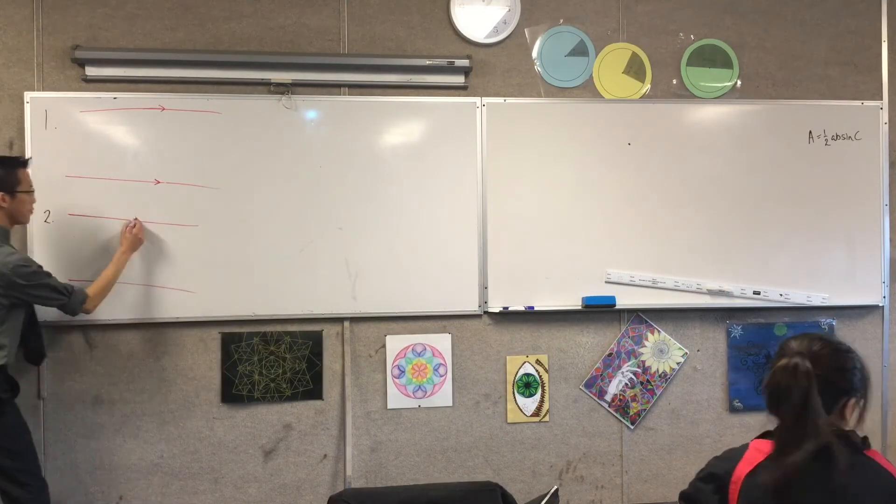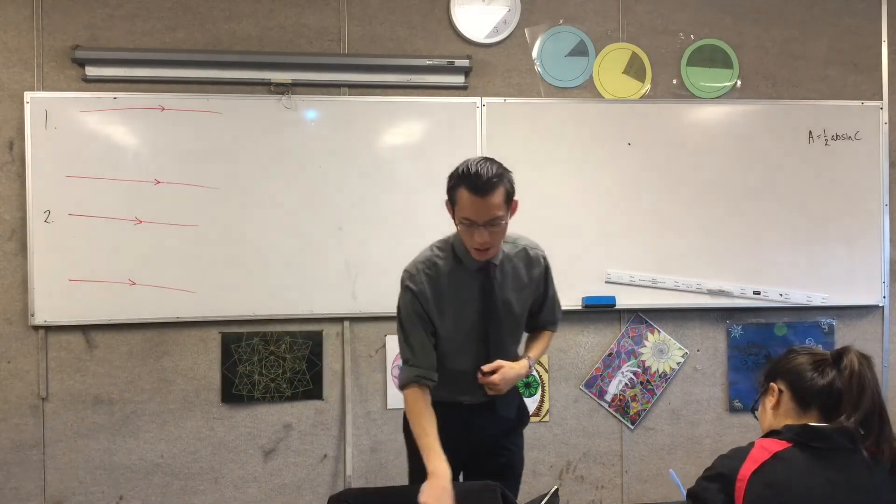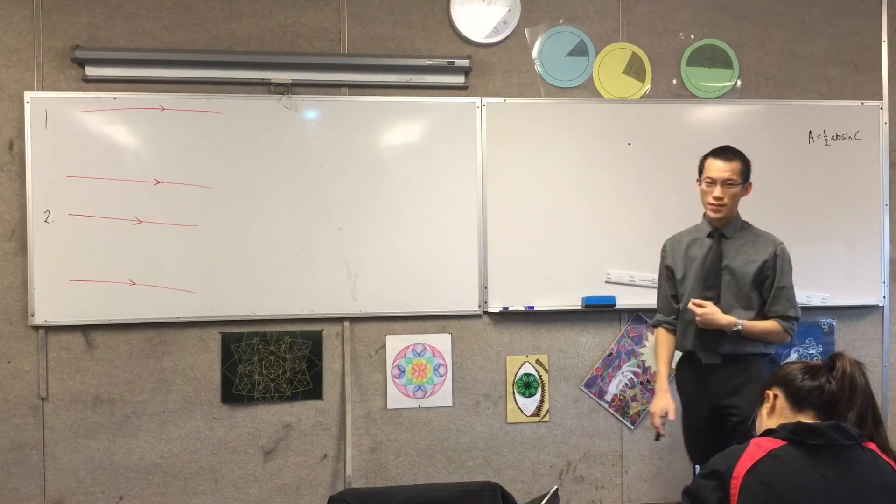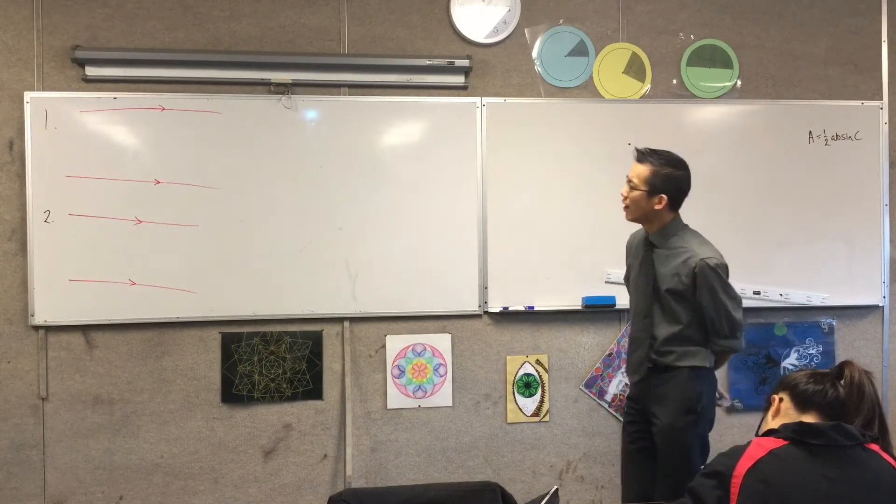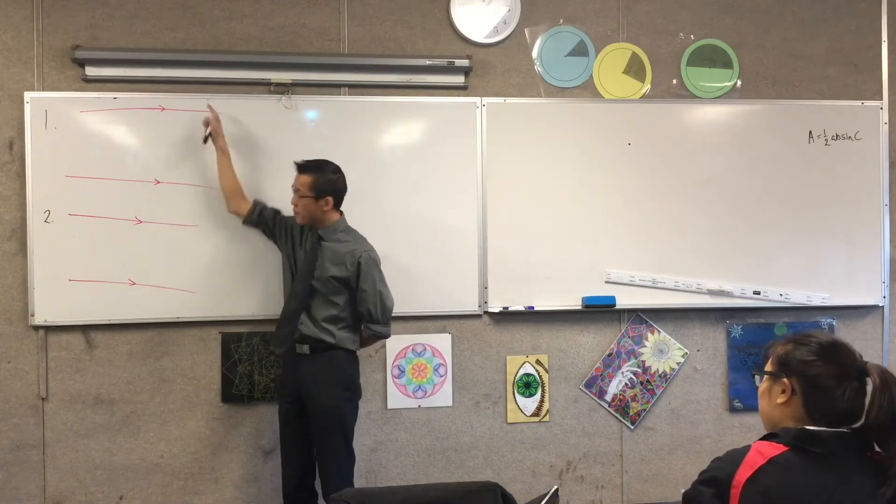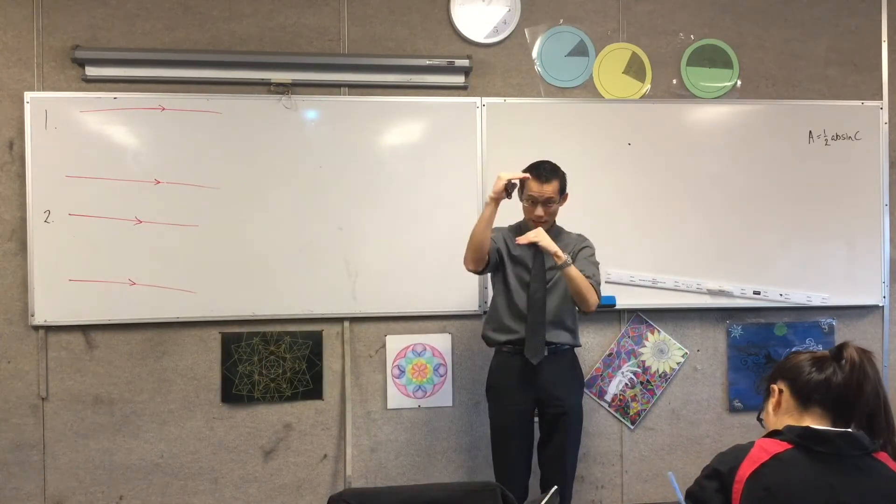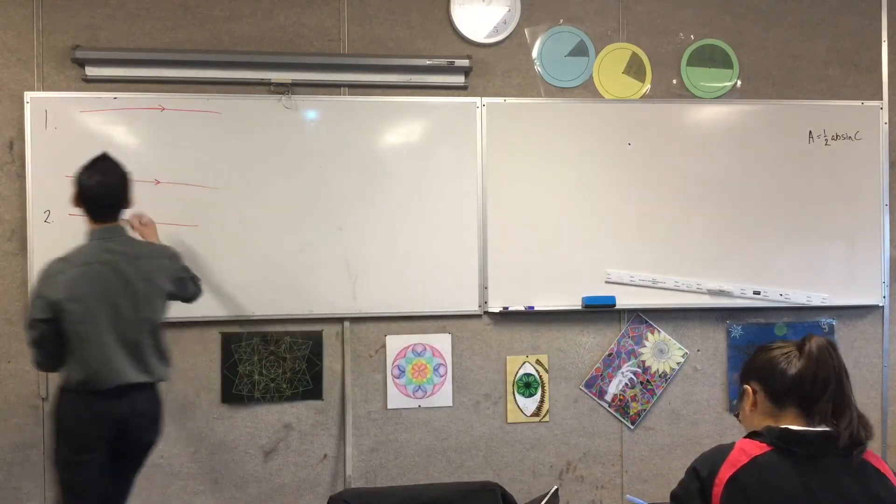So, like I said, for these two properties, you'll need a couple of parallel lines for each. Right, property number one. If you've got a pair of parallel lines and you create a set of triangles between those parallel lines, triangles like this.